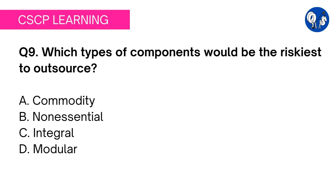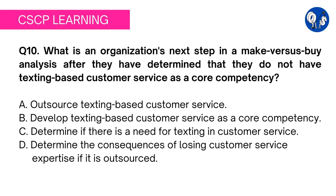Option D: modular design is a product design in which different components can be put together to create a variety of similar products — like IKEA furniture, modular bookshelves, computer RAM, etc. There is no harm in outsourcing modular product components since there is no secret recipe involved. Anyone can copy the design of IKEA furniture. So option C, integral design, is the correct answer for this question.